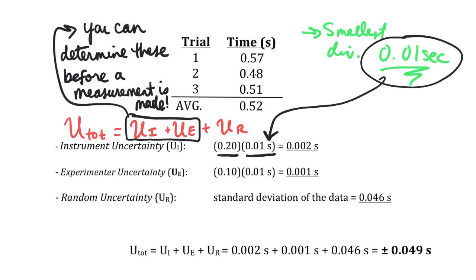To calculate the instrument uncertainty, you take 20% of the smallest division: 0.2 × 0.01 seconds = 0.002 seconds. For the experimenter uncertainty, it's 10%, or 0.10 × 0.01 seconds, yielding 0.001 seconds — one millisecond. The random uncertainty is the standard deviation of all the data measured for this experiment; plugging the values into your calculator, you'll find it is 0.046 seconds.